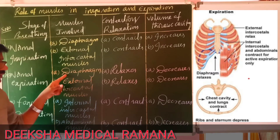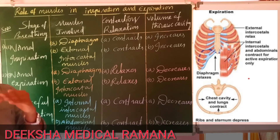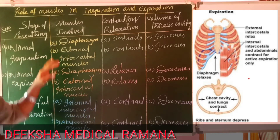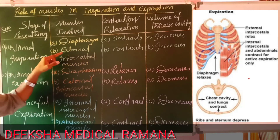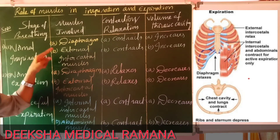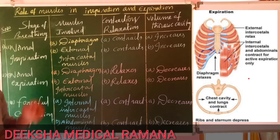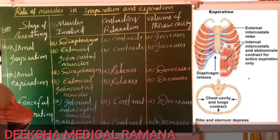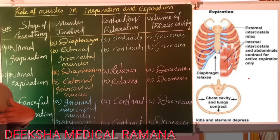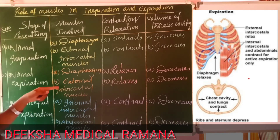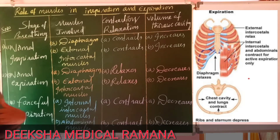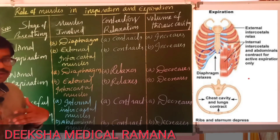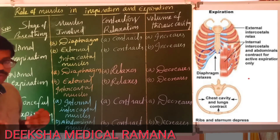During relaxation of the diaphragm, the flattened diaphragm returns to dome shape. During contraction of external intercostal muscles, the ribs and sternum move upward and forward. During relaxation of external intercostal muscles, the ribs return to their relaxed state — that means they come back to normal.